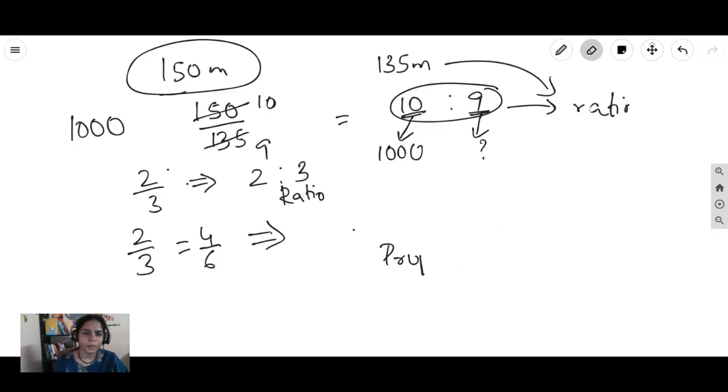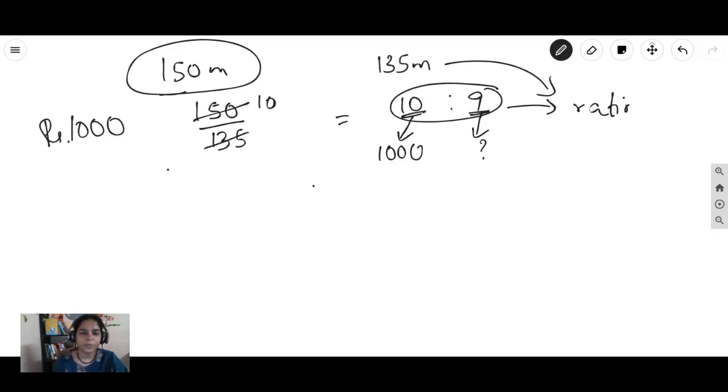Now coming back to our question. This 150 meter high building, to paint it, it costs 1000 rupees. So how much will it cost to paint the 135 meter high building? So now what did we do? We compared the 150 and the 135 with each other by converting it into a fraction. Now if you ask me, can I write it as 135 over 150? Yes, you can write. You can write. But I will come to that and talk about it later.